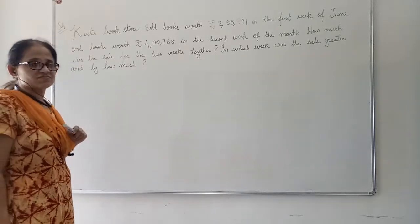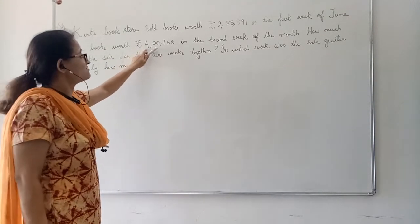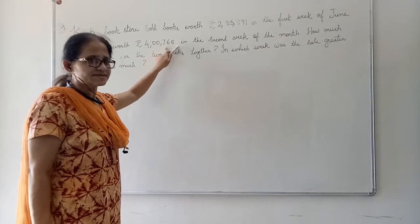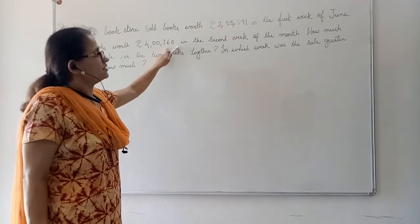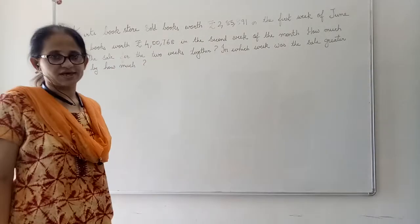In the second week of June, they sold books worth rupees 4,76,768. How much was the sale for the two weeks together?